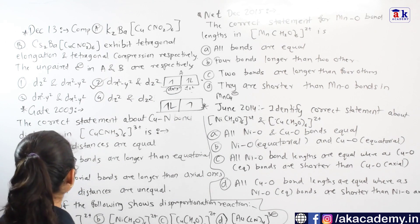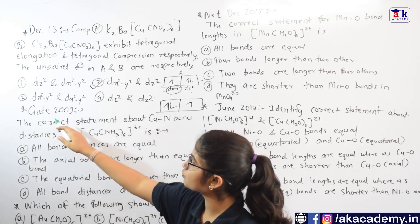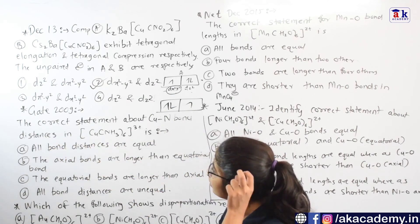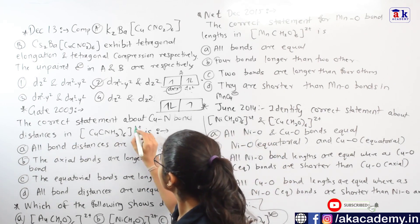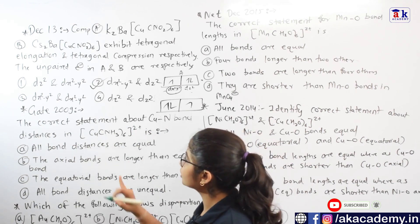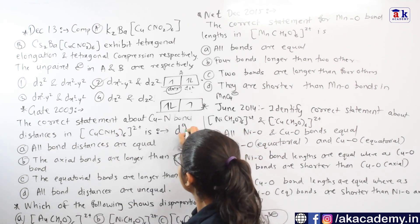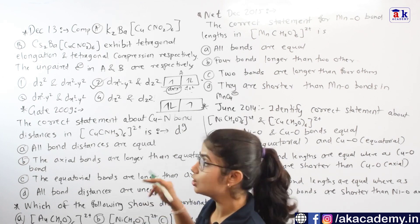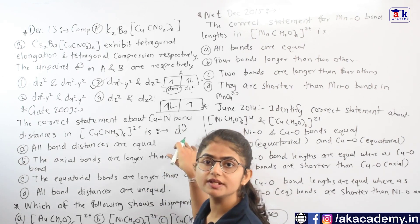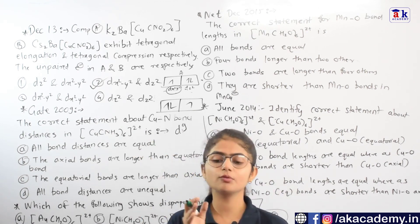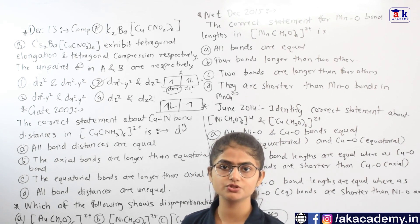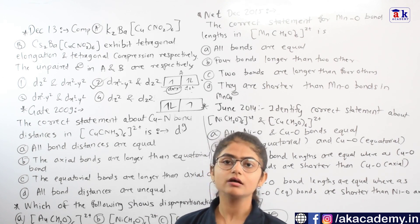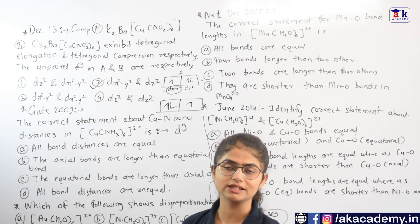The next question is from GATE 2009, about the correct statement regarding Cu-N bond distances in the copper-ammonia complex in the +2 state. Copper in the +2 state has a d9 configuration. From d6 to d9 we can't always predict whether z-in or z-out will occur, but in most cases for d9, the z-out condition — that is, tetragonal elongation — takes place.